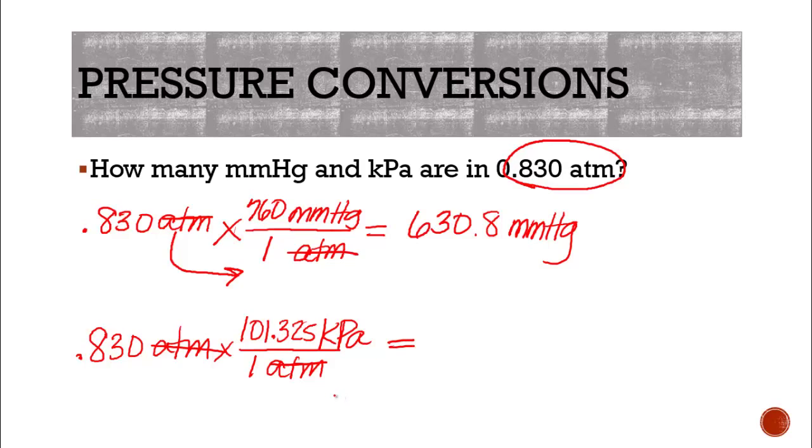And then we just multiply. So 0.830 times 101.325, and we get 84.10 kilopascals.